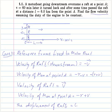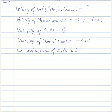The displacement of the raft from the motorboat is actually 0, because it is given that they are meeting at point L. This implies that minus v times T plus v times t is equal to 0. Here, small t is the time when the motorboat travels upstream and capital T is the time when the motorboat travels downstream. This implies that t is equal to T.